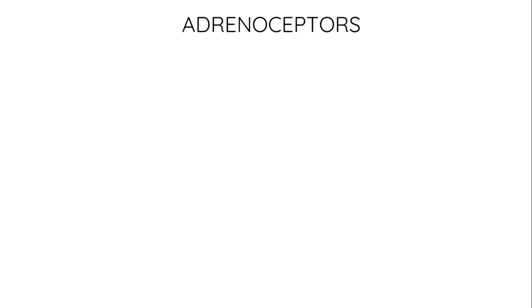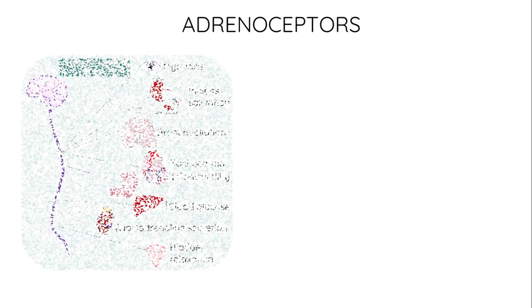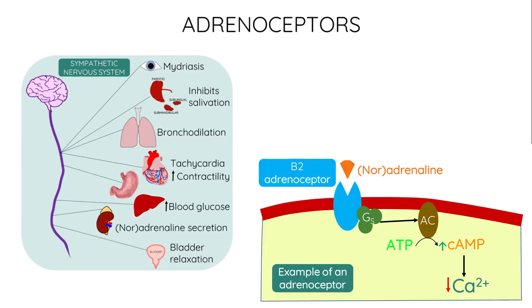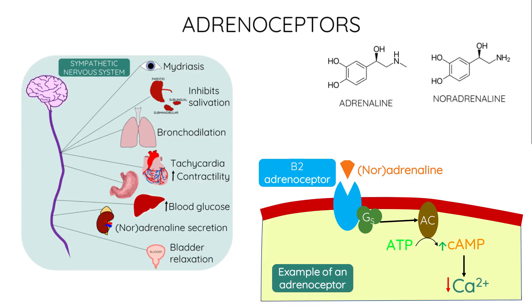Before talking about the mechanism of action of beta-blocking drugs, I'll just give a quick overview of adrenergic receptors, or adrenoseptors. Adrenoseptors mediate sympathetic activation — the body goes into fight-or-flight mode via activation of the sympathetic nervous system. Adrenoseptors are G-protein-coupled receptors that are the targets of catecholamines, such as adrenaline and noradrenaline. This binding leads to a physiological effect downstream, which typically results in an effect useful in fight-or-flight mode.